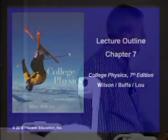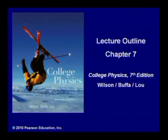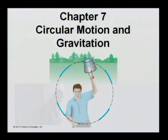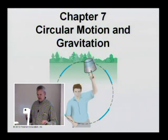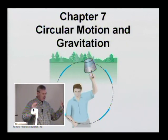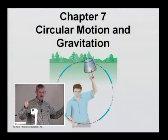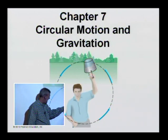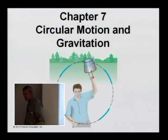What we're going to talk about today is uniform circular motion and gravitation. Uniform means going at a constant speed — not a constant velocity, because we're changing direction all the time. That gives us an acceleration — a net acceleration that goes straight in towards the center of the circle.